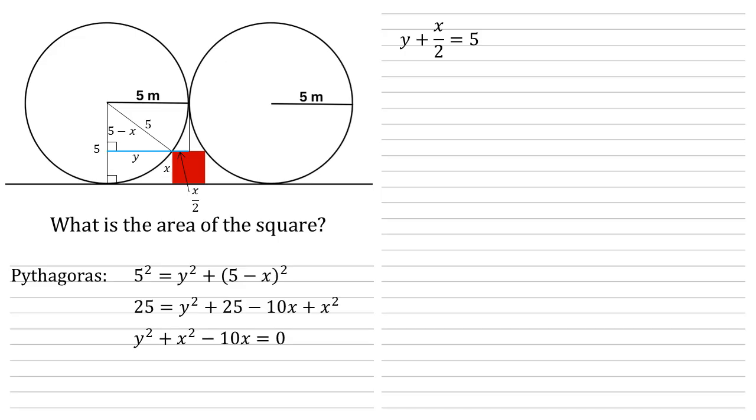We can now make Y the subject by subtracting X over two from both sides, giving us that Y is equal to five minus X over two. If we substitute this now into our Pythagoras equation, we're going to get an equation in X with no other unknowns. So let's do that. Five minus X over two all squared plus X squared minus 10X equals zero. If we square the brackets, we get 25 minus two lots of five times X over two. So minus five X plus X squared over four. We still got the plus X squared minus 10X on the end, which is equal to zero. So bringing the like terms together gives us five X squared over four minus 15X plus 25 equals zero.